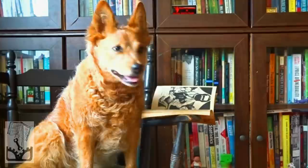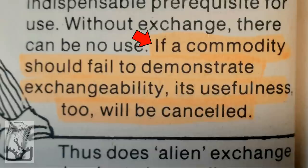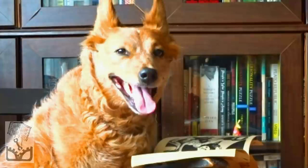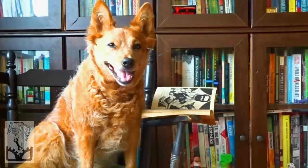Smith and Evans explain this concept: 'If a commodity should fail to demonstrate exchangeability, its usefulness too will be cancelled. It must prove its exchange value before it can be eaten. If no one buys it, the bread will rot on the shelf, even though people starve.' This is about one key problem caused by focusing on exchange value.